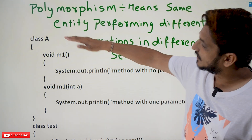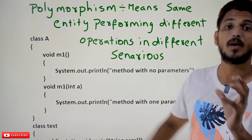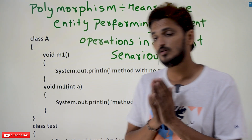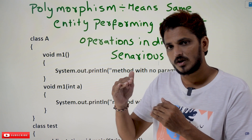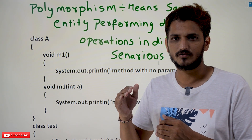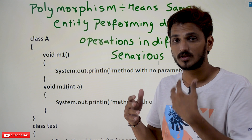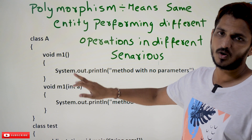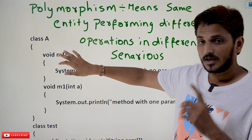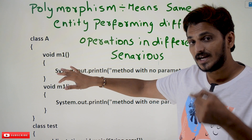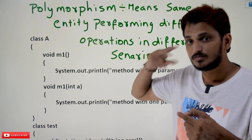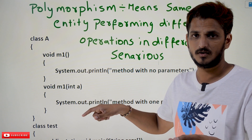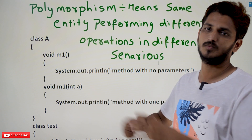Why we call it as method overloading — we call it as compile time polymorphism. Compile time polymorphism means here we are having two concepts: compile time polymorphism and runtime polymorphism. We are going to discuss about runtime polymorphism in our next class. In this class, we are going to discuss about compile time polymorphism. If you are able to identify which method we need to execute during the compile time, we call it as compile time polymorphism.